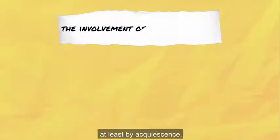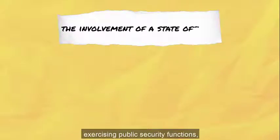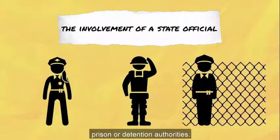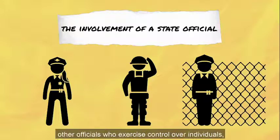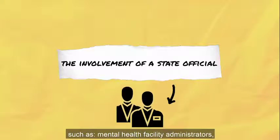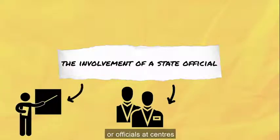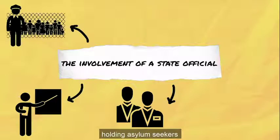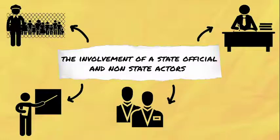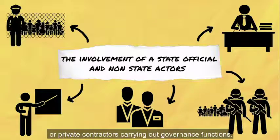Under the Convention, torture requires the involvement of a state official, at least by acquiescence. This will usually include officials exercising public security functions, such as police, military, prison or detention authorities. But it can also involve other officials who exercise control over individuals, such as mental health facility administrators, teaching staff, officials at centres holding asylum seekers or refugees, persons holding de facto power as public officials, or private contractors carrying out governance functions.